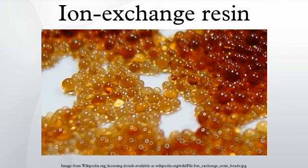There are multiple types of ion exchange resin. Most commercial resins are made of polystyrene sulfonate. Ion exchange resins are widely used in different separation, purification, and decontamination processes. The most common examples are water softening and water purification. In many cases, ion exchange resins were introduced as a more flexible alternative to the use of natural or artificial zeolites. Also, ion exchange resins are highly effective in the biodiesel filtration process.